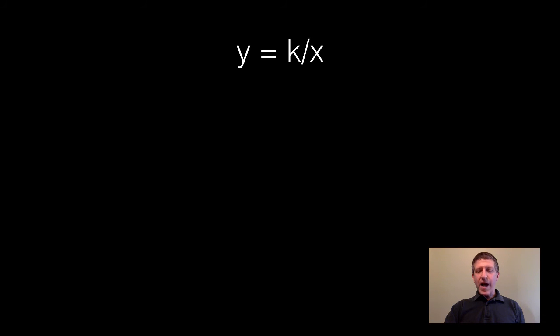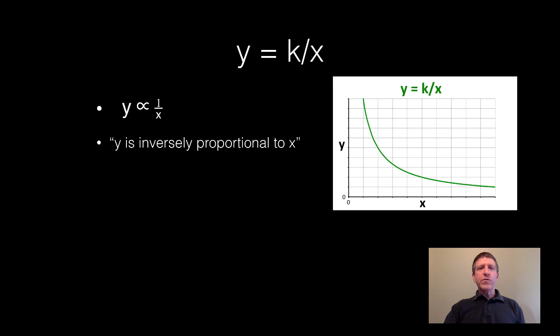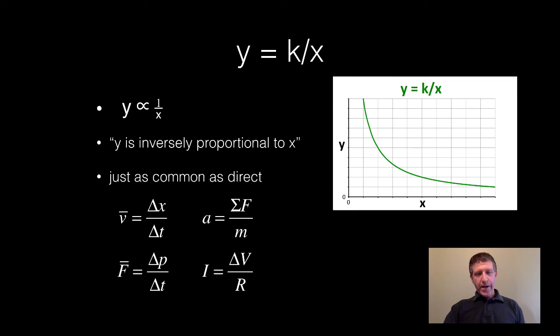This relationship is also very common. Y equals k over x. When you say this you simply say y is inversely proportional to x, which means the same thing as y is proportional to 1 over x. It is just as common as direct. You can write many direct relationships as an inverse relationship. Here are some examples.